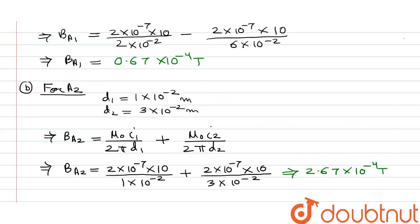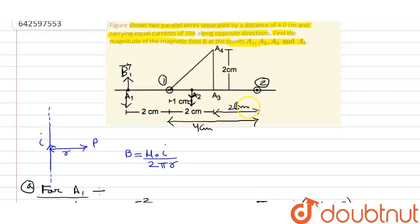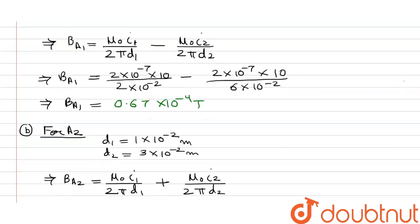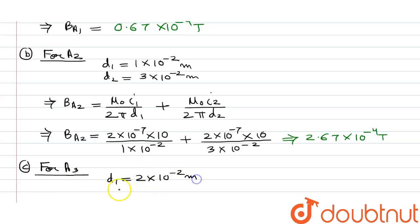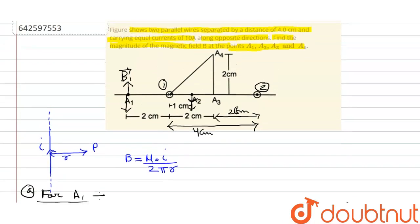Now we calculate the net magnetic field at point a3. Point a3 is in the middle between the two wires, so the distance from wire number one is 2 centimeters and the distance from wire number two is also 2 centimeters. So d1 = 2×10⁻² meters and d2 = 2×10⁻² meters.